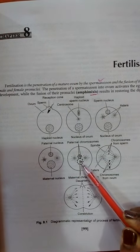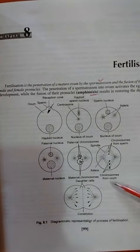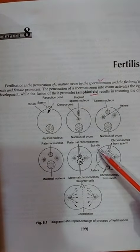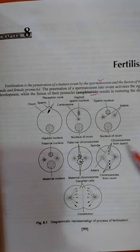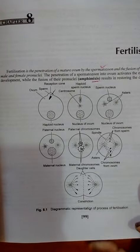Aster rays are formed which pull the tetrads towards the equator. Division of the nucleus starts. The spindle fibers, chromosomes of sperm, and chromosomes of the ovum are visible.